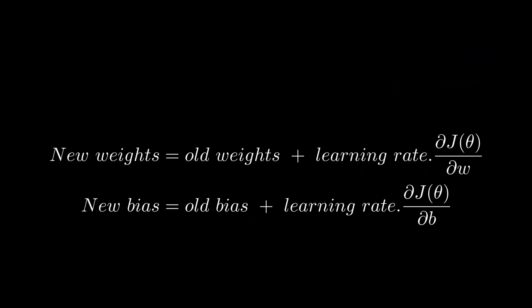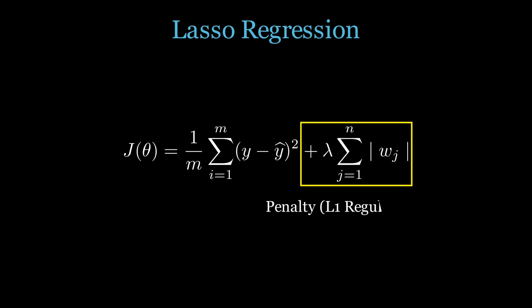Then we can use these two equations in gradient descent to find the optimum values of weights and biases. Here the learning rate is how slow or fast the learning process should be. Let's move to lasso. Lasso uses the same mean squared error loss function but this time we will apply L1 regularization and will repeat the same steps.